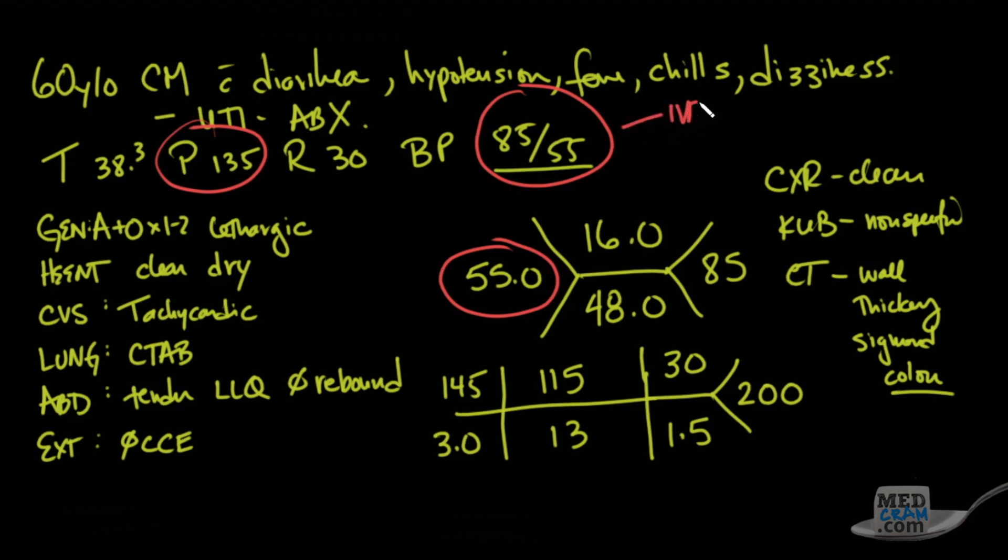The kind of IV fluids that you would want to give are resuscitative fluids so that you could expand the volume. One appropriate type would be normal saline. However, there's recent evidence that shows that giving balanced fluids, especially in patients with renal insufficiency, will be beneficial. So another probably more appropriate fluid would be lactated ringers, or LR. Another one would be half normal saline with 75 milliequivalents of sodium bicarbonate. So instead of just giving pure chloride, you're giving lactated ringers or bicarbonate solution.